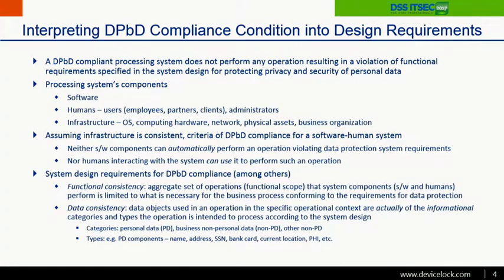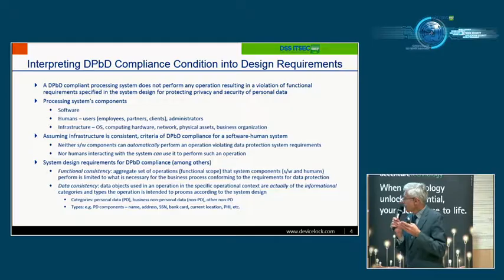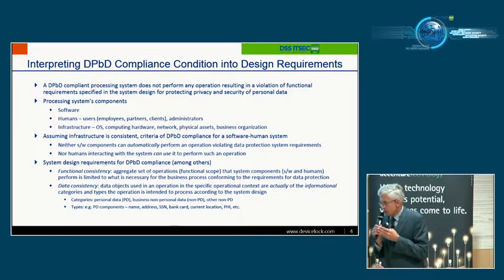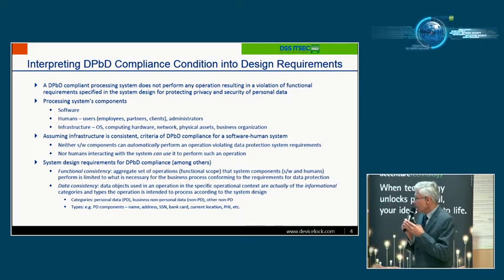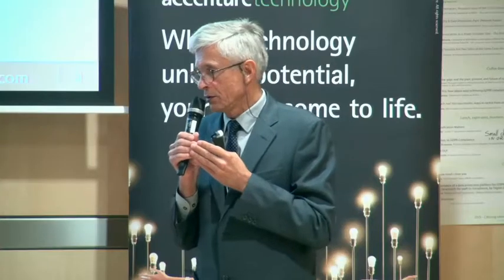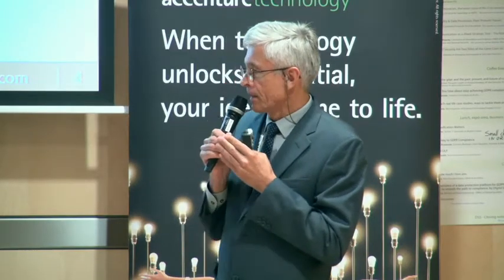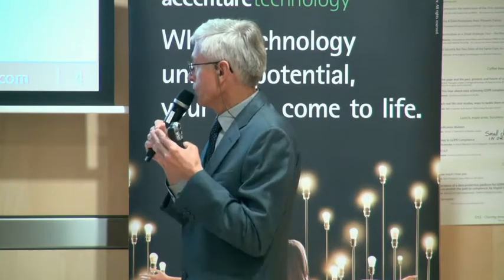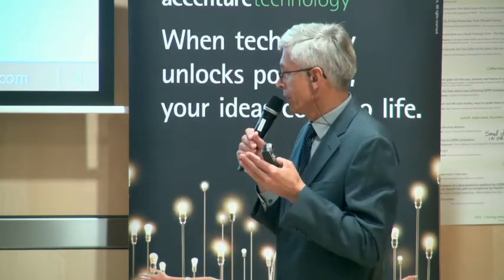Under categories I mean: personal data, business non-personal data, and other non-personal data. Personal data is covered by GDPR. Business non-personal data — corporate sensitive or confidential data — must also be protected, but based on data security technologies and principles rather than privacy protection principles. These are data used in business processes that by their nature are not personal.